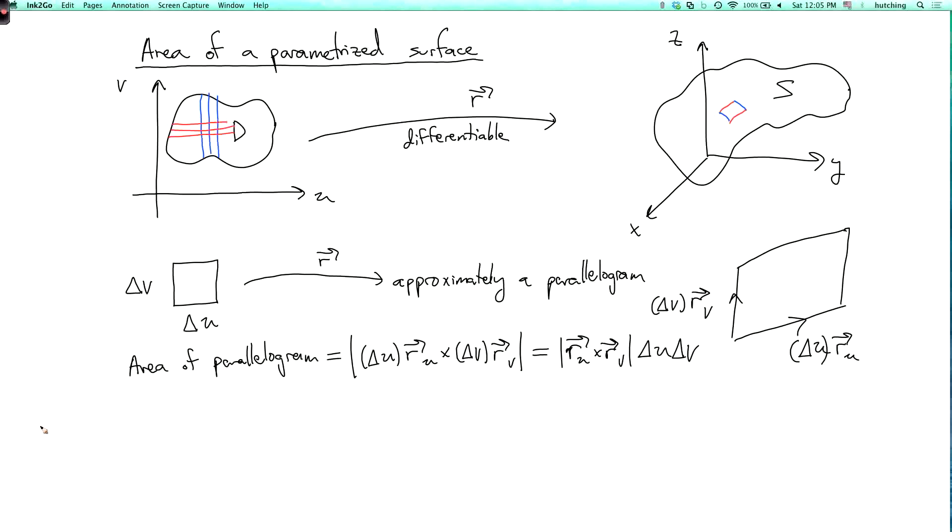And then the area of the surface is the limit as the size of these rectangles go to zero of the sum over the rectangles of the area. Sorry, these are not rectangles. Well, you sum over rectangles. You sum over area of the parallelogram.